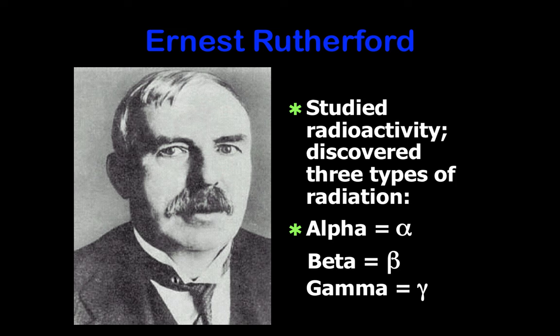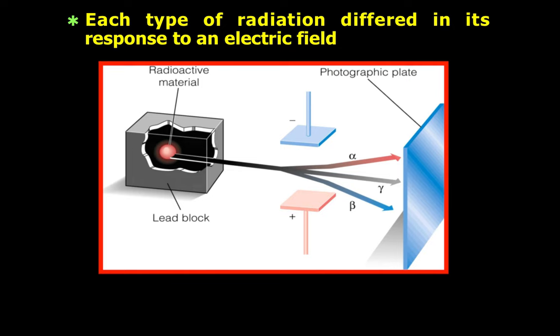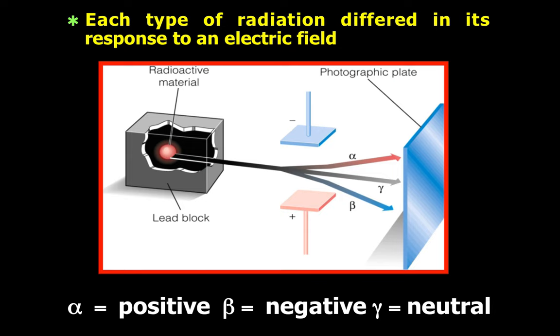Rutherford determined that each type of radiation differed in its response to an electrical field. Since the alpha particles were attracted toward the negative plate, they had to be positively charged. Remember, opposites attract. Since beta particles were attracted toward the positive plate, they had to be negatively charged. And since gamma rays were not affected, they had to be neutral.